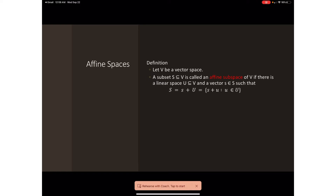That is, S equals the set of s plus u where u is an element of capital U. So we translate each single vector of the linear space U by the constant vector s, and we arrive at a subset capital S that is an affine subspace.